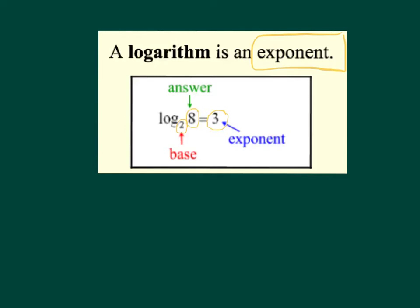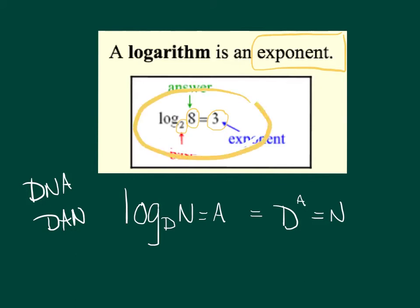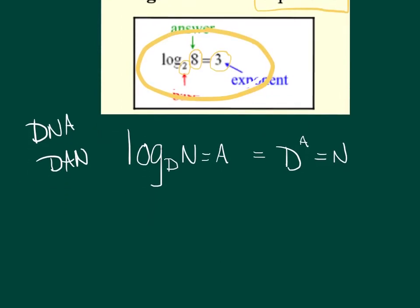For those of you having issues, worst case scenario — we want to nail this on our exam. I've got a little trick called DNA. If you always say to yourself this is DNA, when you convert it to exponential, you always get Dan: D to the A equals N. It's going to work every time. If you can convert on your own, that's perfect, but if you can't, this little trick will work.